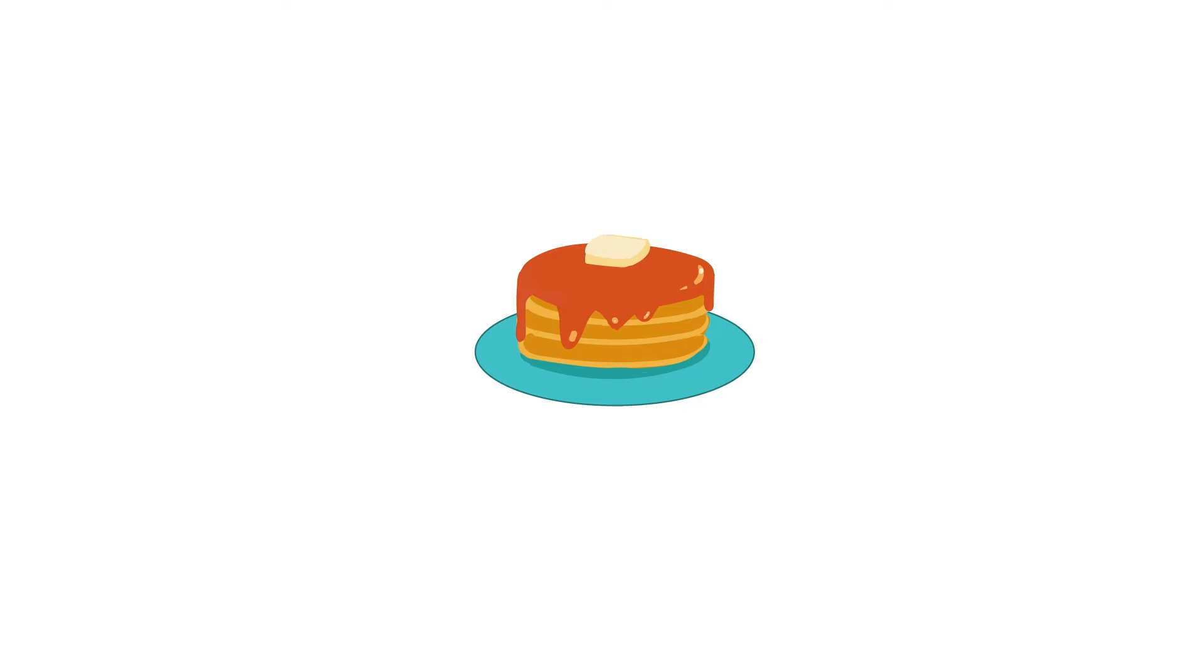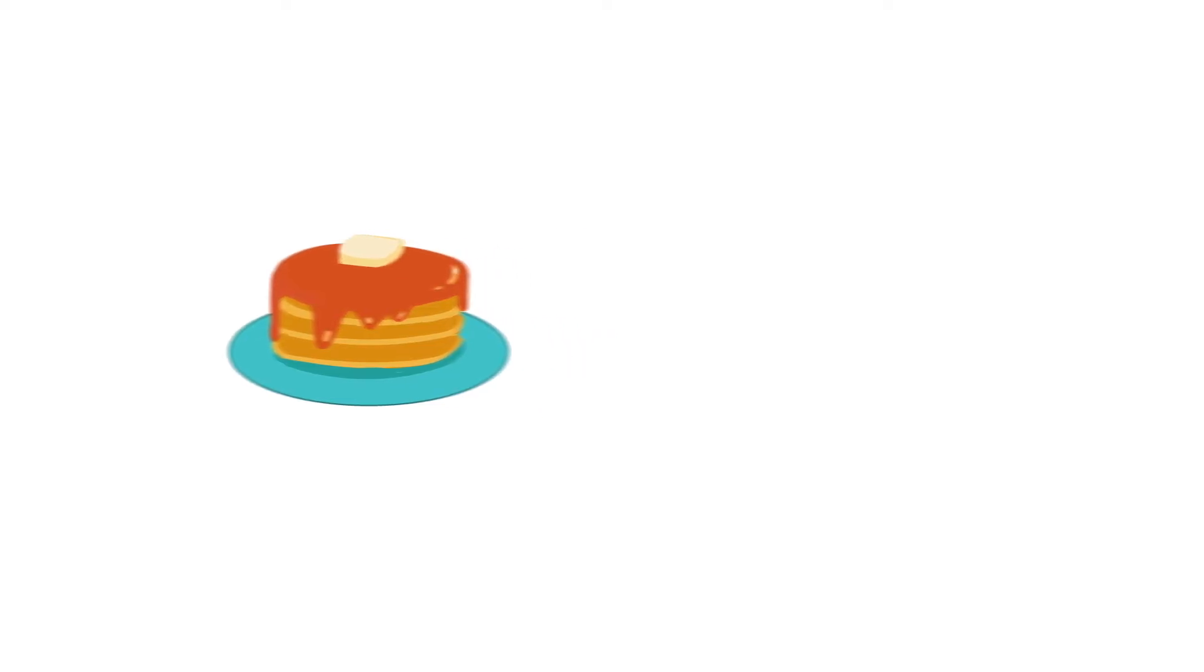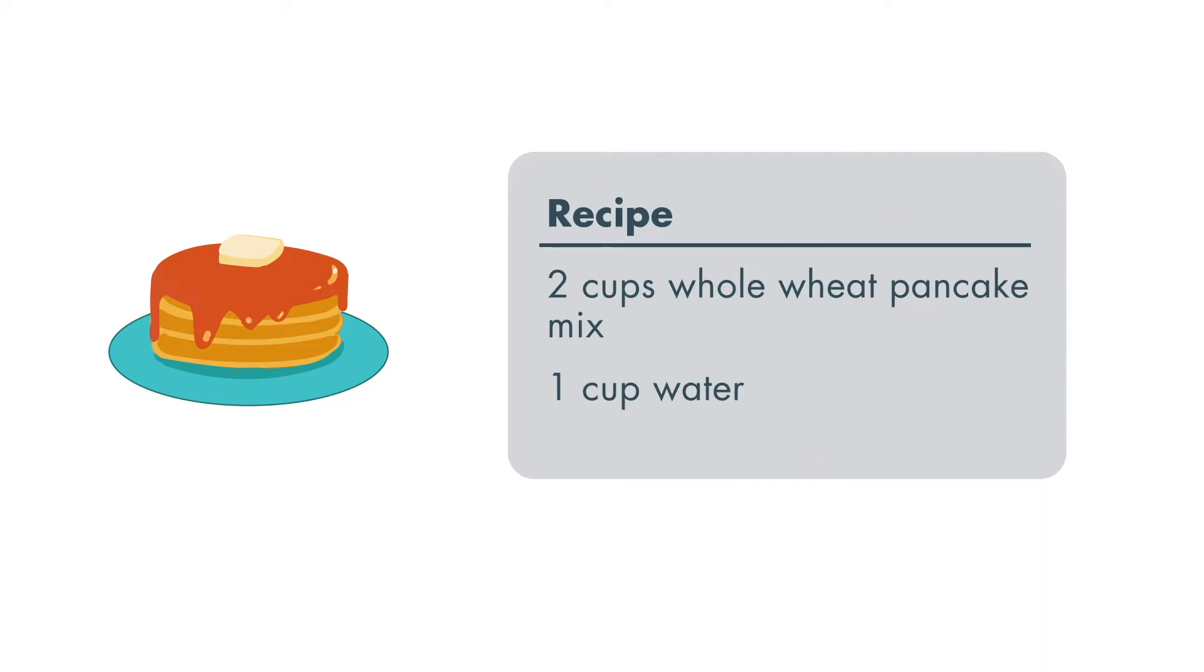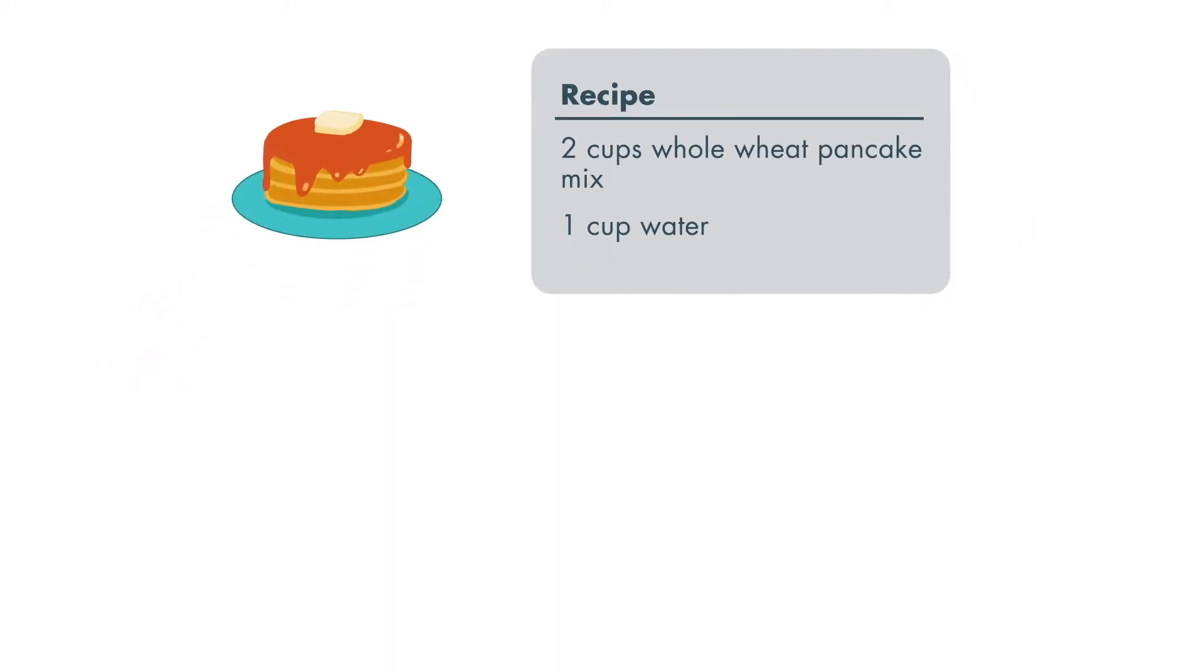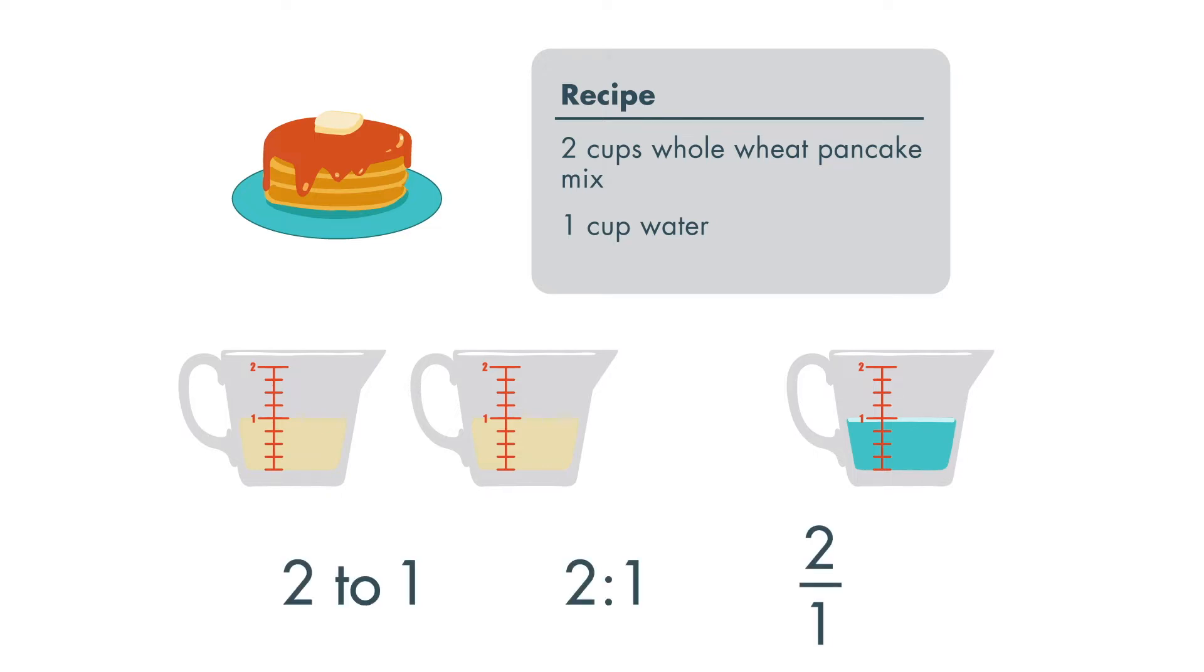Ratios are often used with recipes. When making pancakes, the ratio of pancake mix to water is 2 to 1. That means you would use 2 cups of mix for every 1 cup of water. The ratio can be written in any of these formats and is read as 2 to 1.